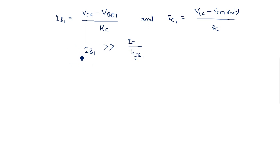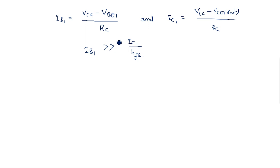The value of IB1 is very far greater compared to IC1 divided by hFE because the beta value is large. As beta value is more, IB1 becomes very much greater compared to IC1 by hFE, and hence we can say that Q1 is driven heavily into saturation.